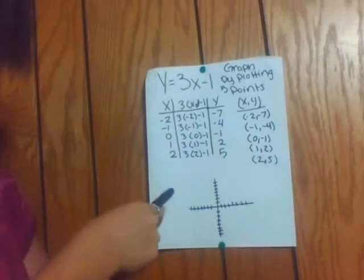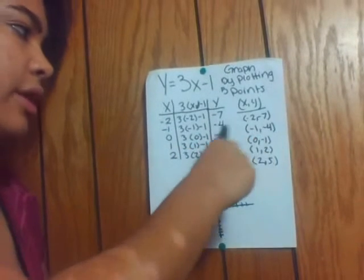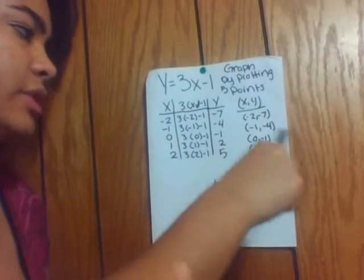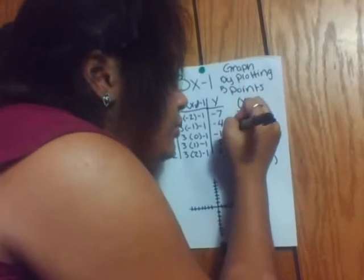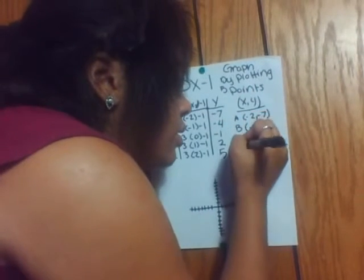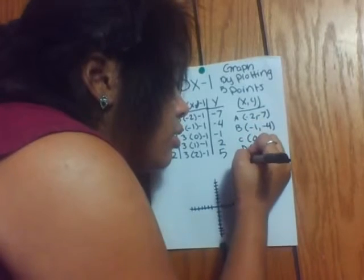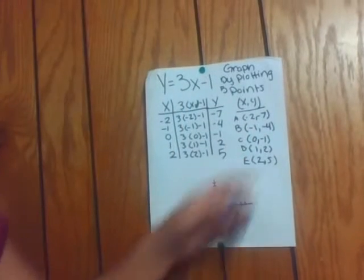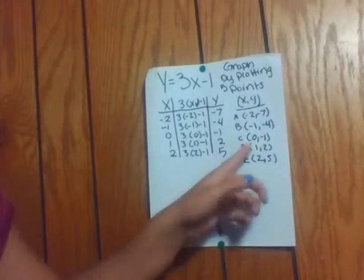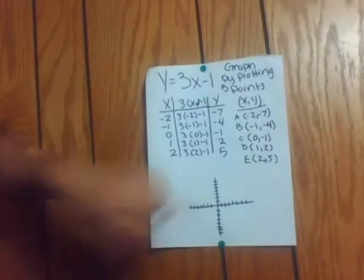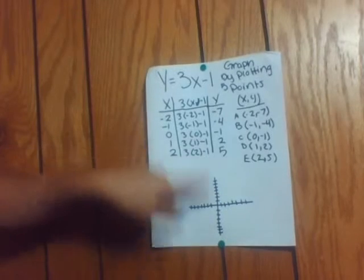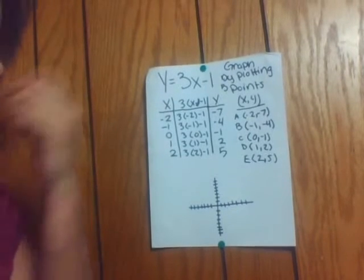You can also label these as point A, point B, point C, point D, and point E. Now you're going to graph these on a graph. Since the highest number is 7, I made 7 lines going up and 7 lines going to the right and left.